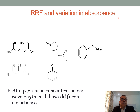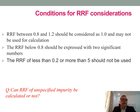RRF and variation in absorbance: there can be huge differences in the structure of molecules. Each molecule has a different absorbance capacity — some will give high absorbance while others will give low absorbance at the same concentration. Regarding conditions for RRF consideration: an RRF between 0.8 and 1.2 should be considered as 1 and may not be used for calculation. An RRF below 0.8 should be expressed with two significant figures. An RRF of less than 0.2 or more than 5 should not be used.